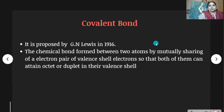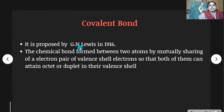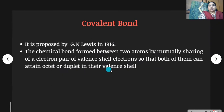Covalent bond: proposed by G. N. Lewis in 1916. The chemical bond formed between two atoms by mutually sharing of an electron pair of valence shell electrons, so that both of them can attain octet or duplet in their valence shell.